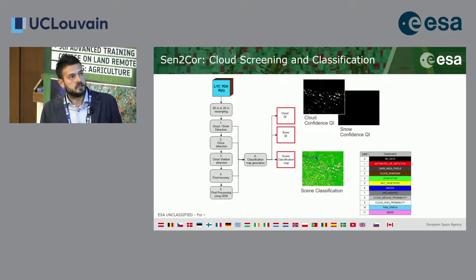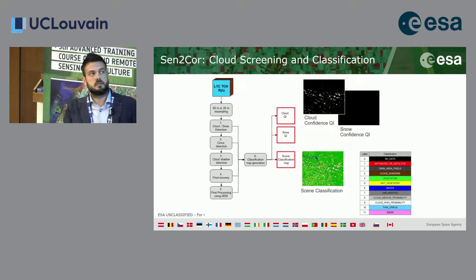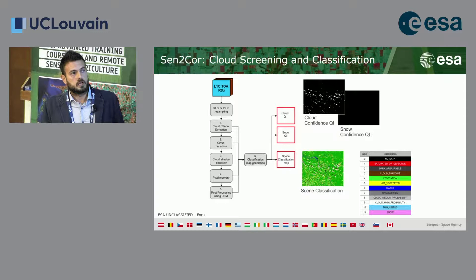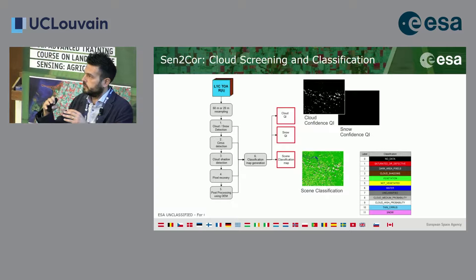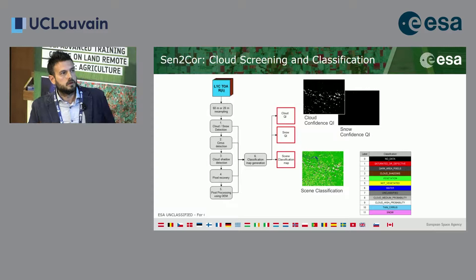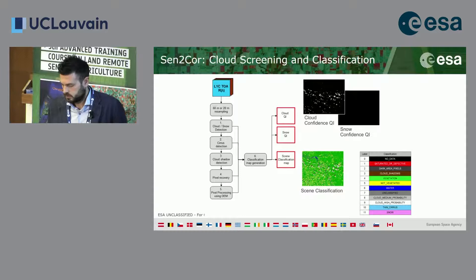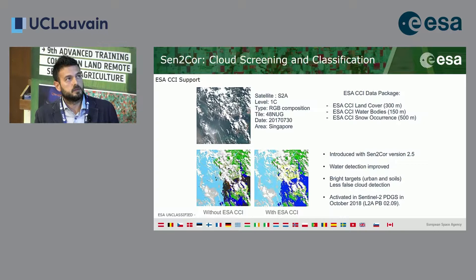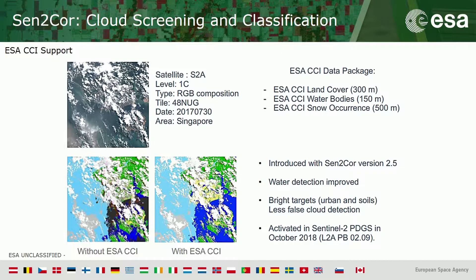The Scene Classification Layer classes include: no data, saturated, dark area pixels — which can be misleading as they may contain cloud shadows — cloud shadow, vegetation, water, and cloud classes. One improvement in the latest version of Sen2Cor is the ability to add the ESA CCI data package: a land cover map at 300 meters, water bodies at 100 meters, and snow occurrence at 500 meters, which improves cloud screening and classification.